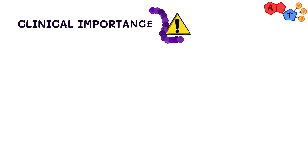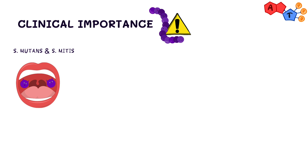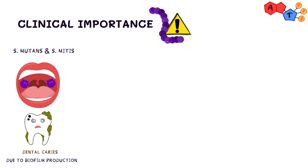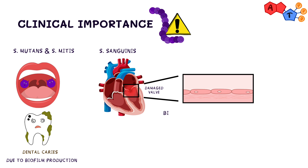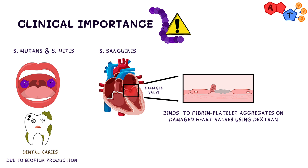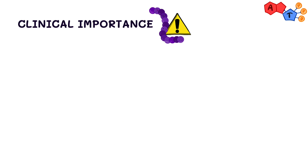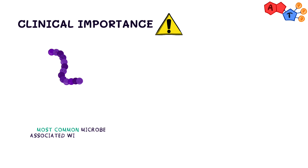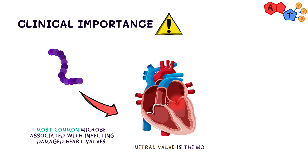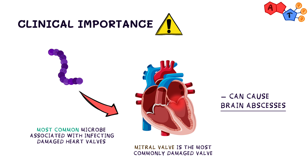Moving on to the symptoms: Streptococcus mutans and Streptococcus mitis cause dental caries, because they can produce a biofilm as previously mentioned. On the other hand, Streptococcus sanguinis binds to fibrin-platelet aggregates on damaged heart valves using dextran, causing subacute bacterial endocarditis. It's good to note that this is the most common bug that infects damaged heart valves, and the mitral valve is the most commonly damaged in this case. Finally, Streptococcus viridans can also cause brain abscesses along with Staph aureus.